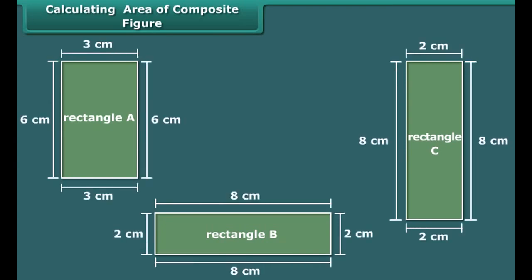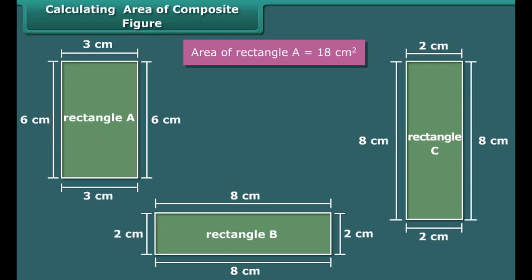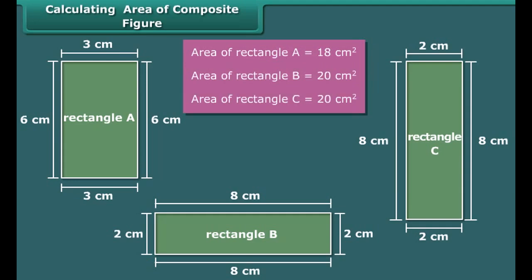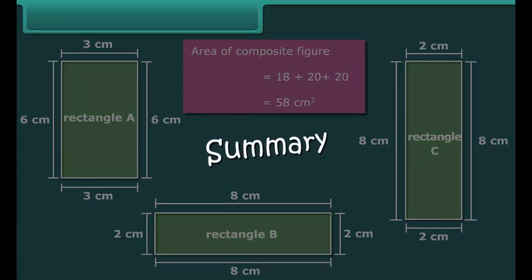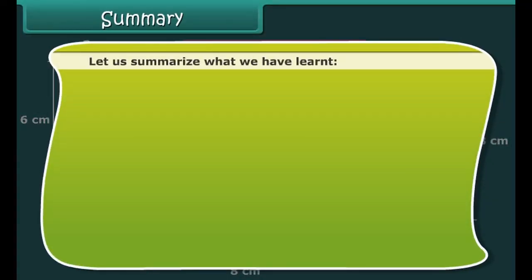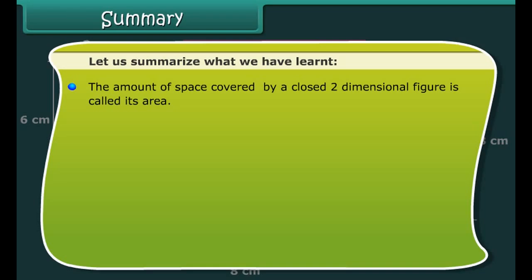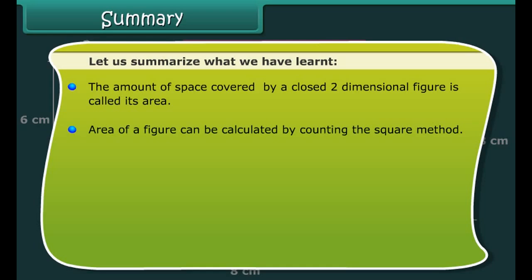Now let us calculate the area of a shape made up of multiple rectangles. First, break the composite figure into individual rectangles. Calculate the area of each rectangle, then sum up all the areas to find the area of the composite figure. Here, we divide the given composite figure into 3 rectangles. The area of rectangle A is 18 square centimeters, and the areas of rectangles B and C are the same — 20 square centimeters each. Thus, the area of the composite figure is 18 plus 20 plus 20, which equals 58 square centimeters.